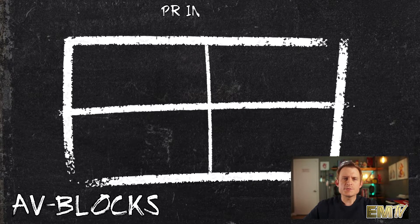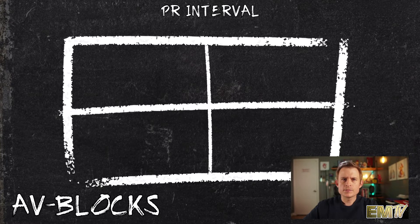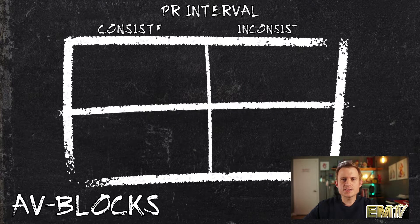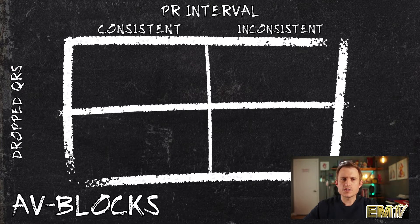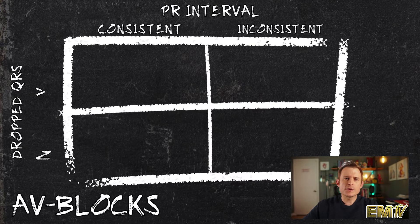The first criteria is PR Interval. For the top two rows of the table, I'll identify whether or not my PR Interval is consistent or inconsistent. The second criteria is whether or not the rhythm drops a QRS complex. On the left side of my table, I'll indicate whether or not the rhythm drops a QRS or not.